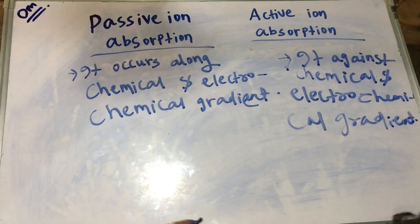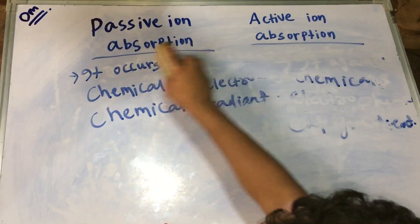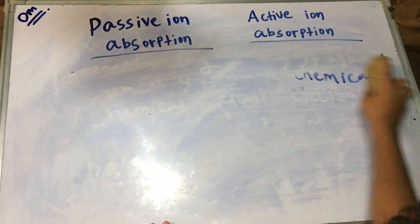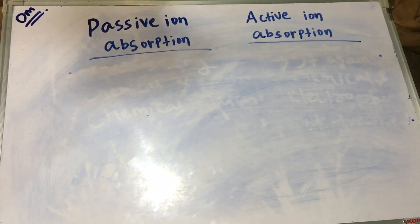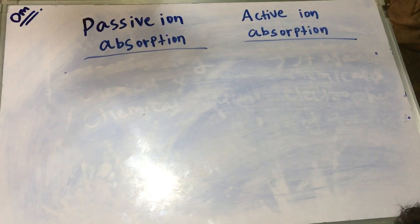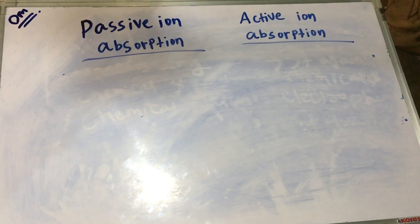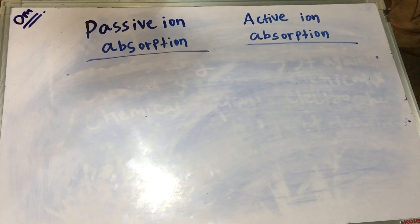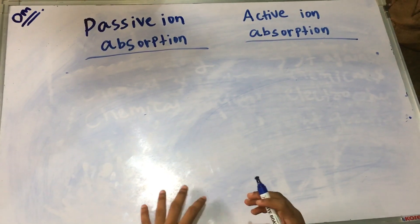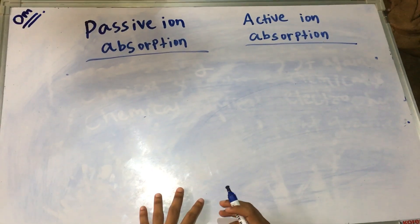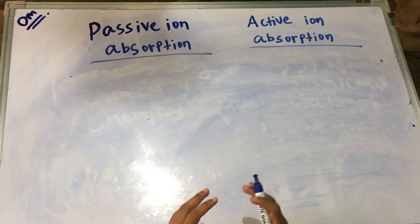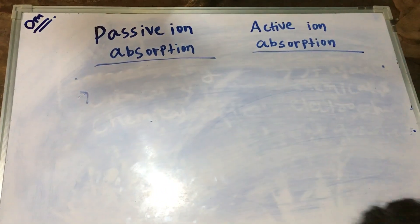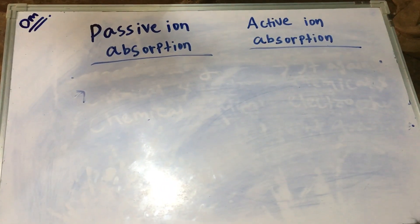The third point between passive ion absorption and active ion absorption is that passive ion absorption is a physical process, in which accumulation of ions is less.